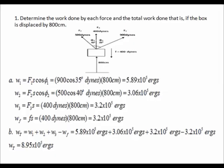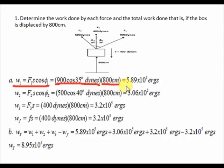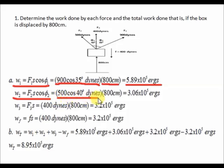Let us now calculate the work done for each force. For the work done by F1, the formula is W₁ = F1·S·cosine theta₁, which equals 900 dynes multiplied by cosine 35 degrees multiplied by 800 centimeters, giving an answer of 5.89 × 10⁵ ergs. For the work done by F2, the formula is W₂ = F2·S·cosine theta₂, which equals 500 dynes multiplied by cosine 40 degrees multiplied by 800 centimeters, giving an answer of 3.06 × 10⁵ ergs.